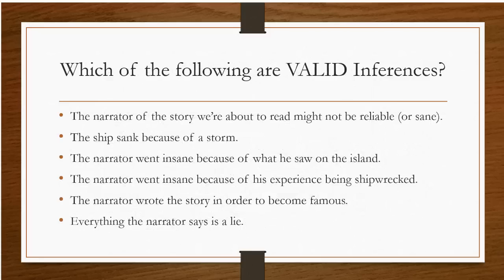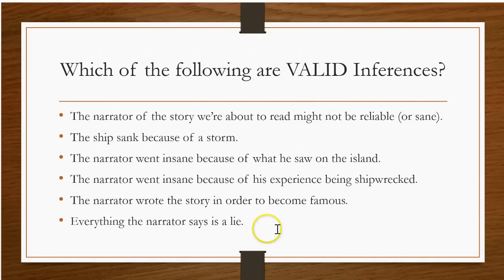Here are our questions. Which of the following are valid inferences? Number one: the narrator of the story we're about to read might not be reliable or sane. Number two: the ship sank because of a storm. Number three: the narrator went insane because of what he saw on the island. Number four: the narrator went insane because of the experience of being shipwrecked. Number five: the narrator wrote the story in order to become famous. Number six: everything the narrator says is a lie. If you need to, pause this and go back to the paragraph to figure out which are valid inferences and which are things we don't know yet.